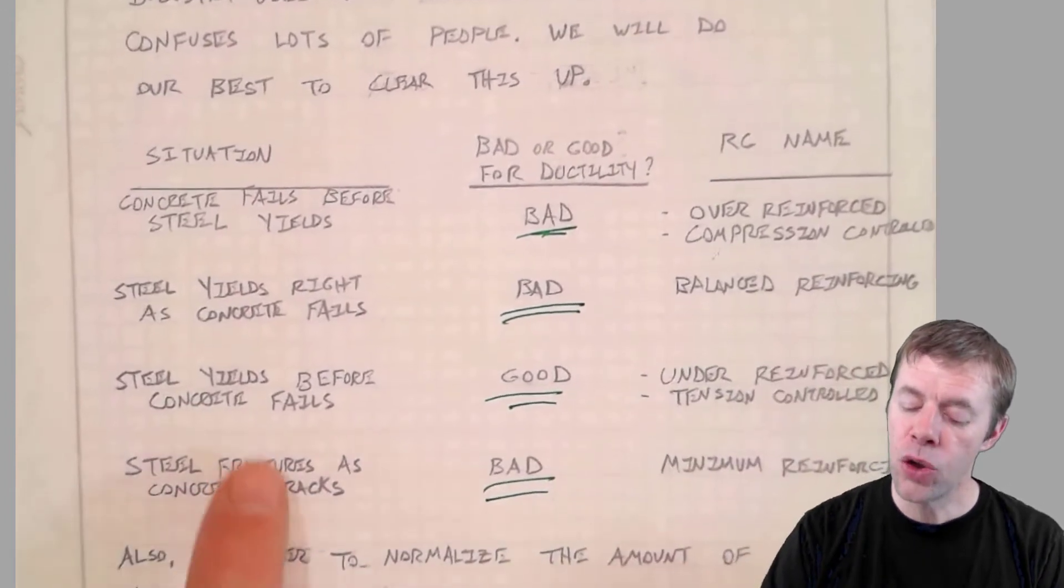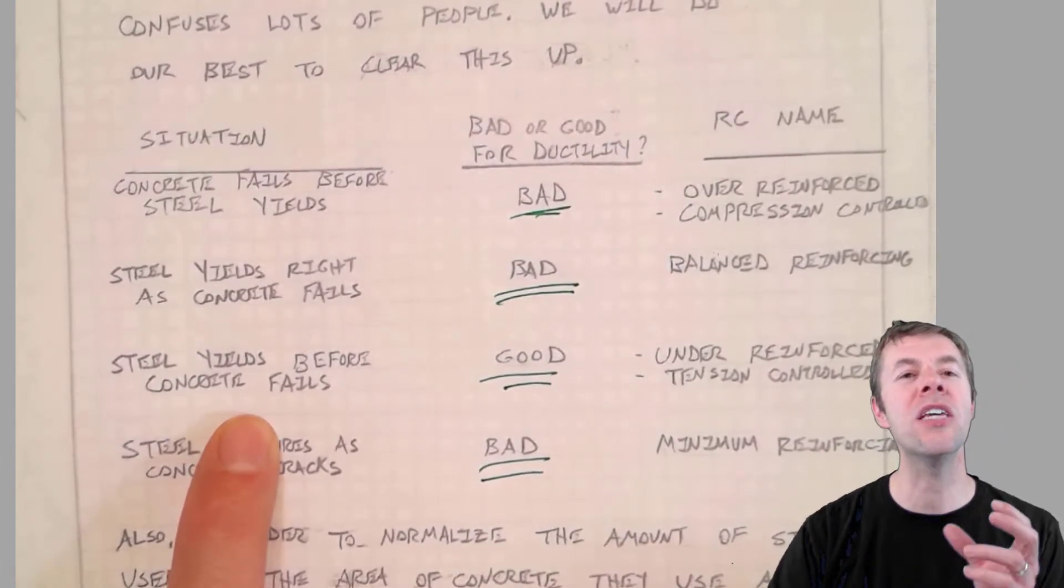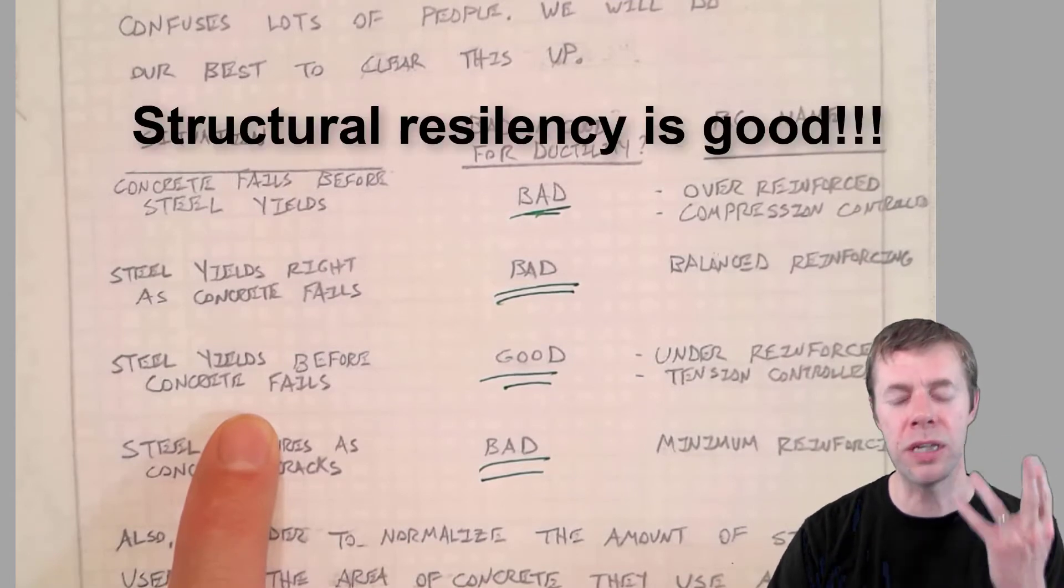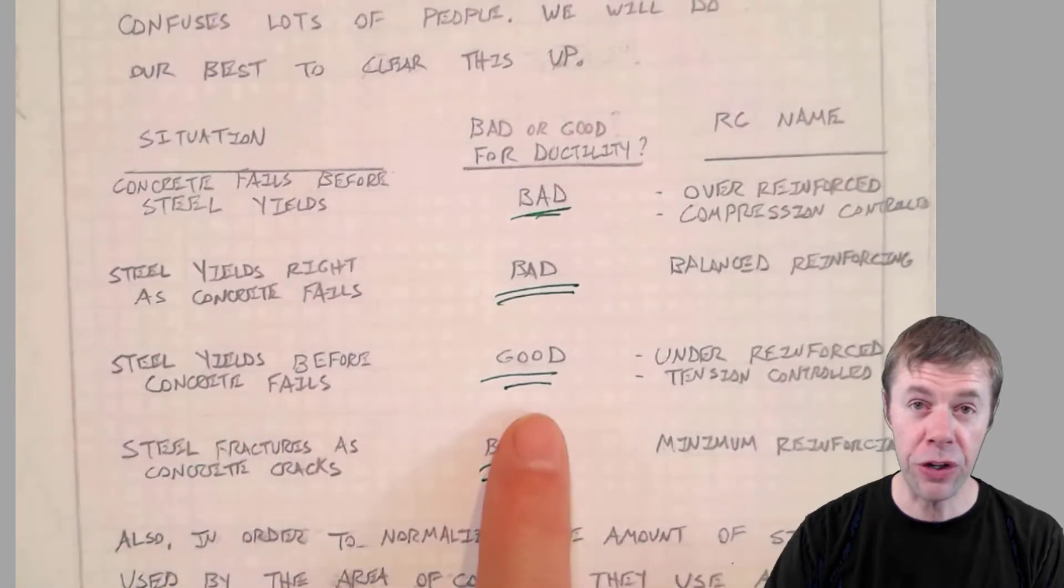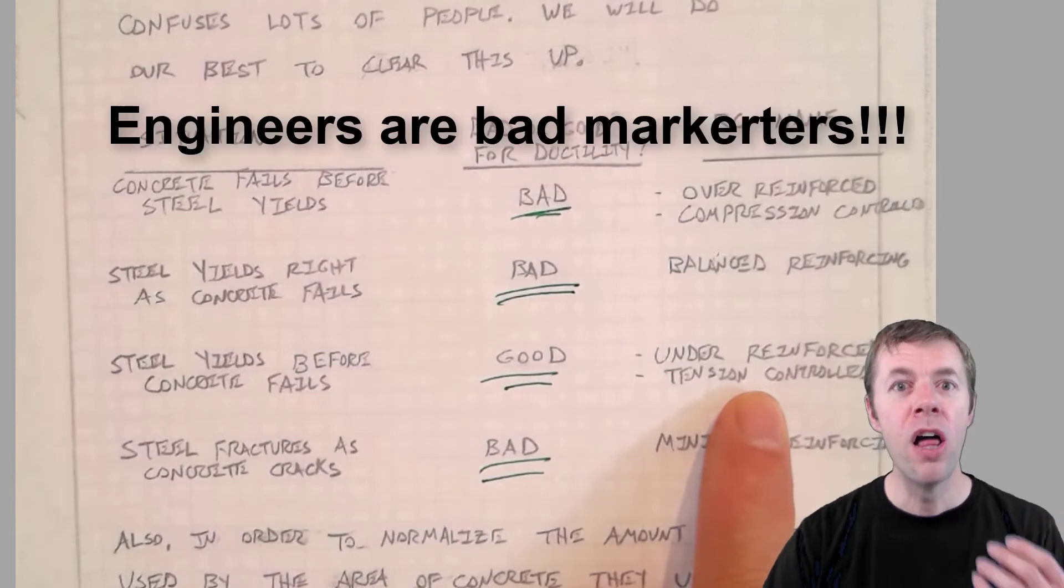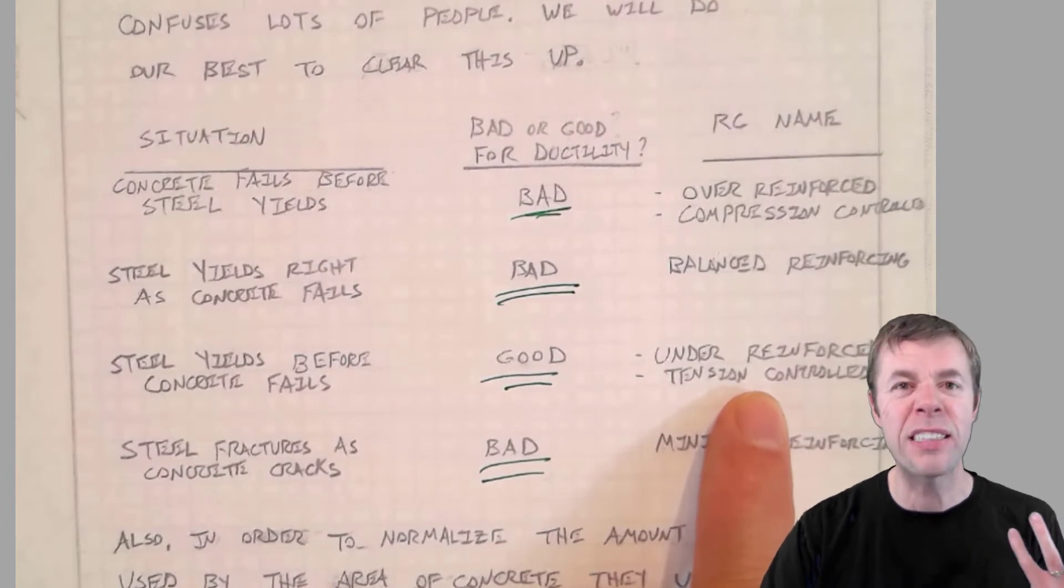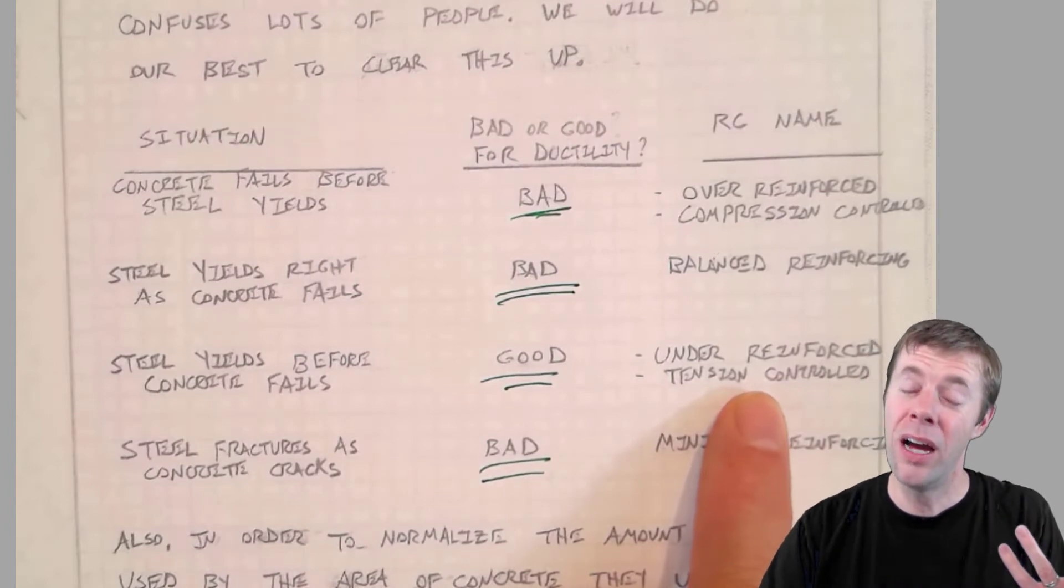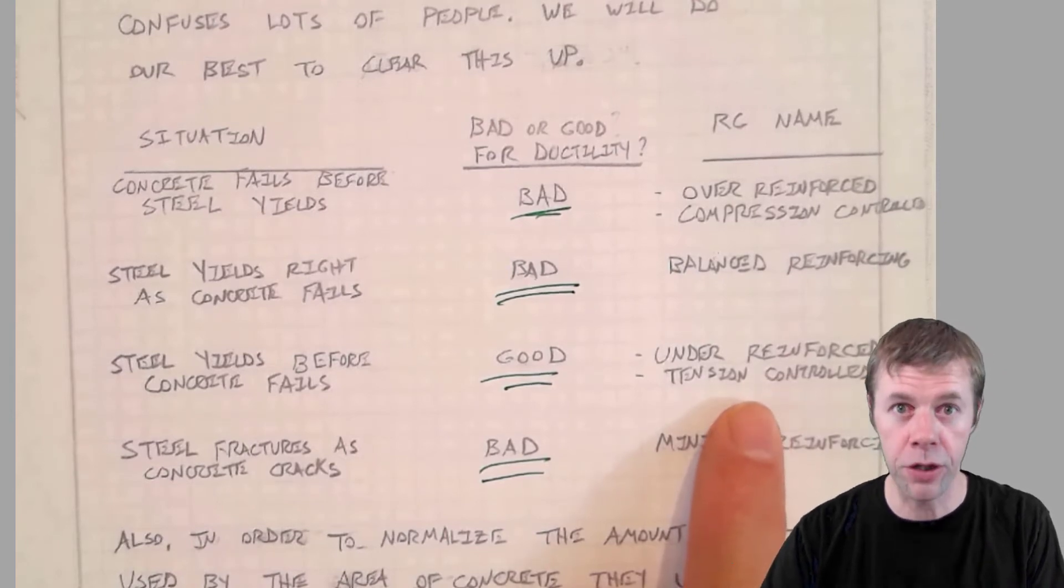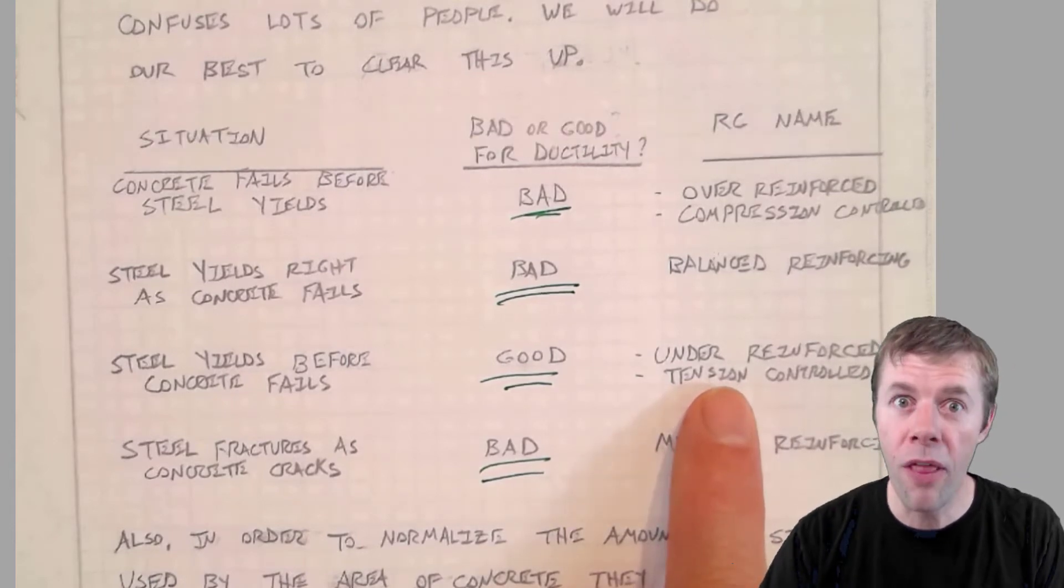What you want is you want your steel to yield before your concrete fails. You want your steel to yield and give and bend and allow you to have lots and lots of structural resiliency. This is very good. And this is called under-reinforced. I mean what a horrible name. The good thing is called under-reinforced. It sounds dangerous. It sounds like it's not safe. I know but it's right. It's very safe. It's also called tension controlled. Which is better. But a lot of folks still call it under-reinforced. And that is good. You want that.